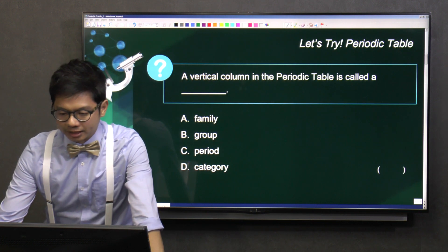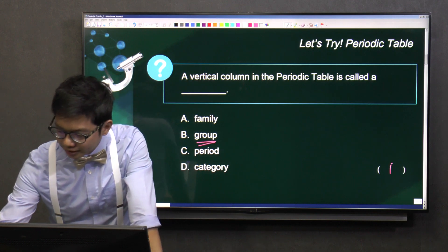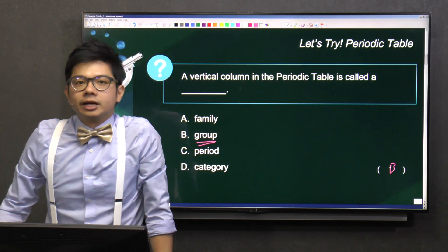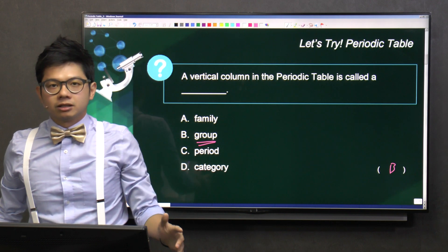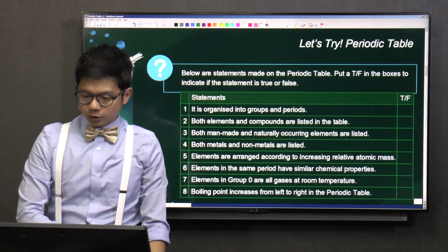A vertical column in the periodic table is called the group. This is very straightforward. And do you recall, if it's a horizontal row, what is it called? Start with P. Period. Excellent.